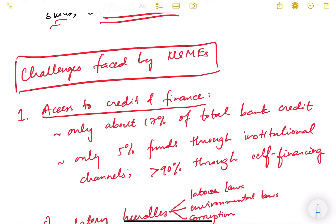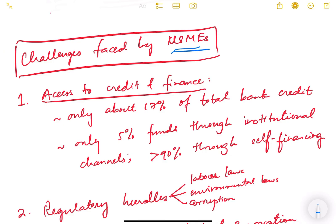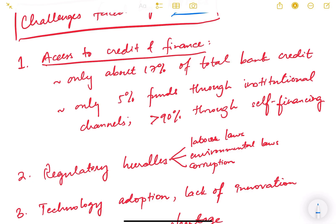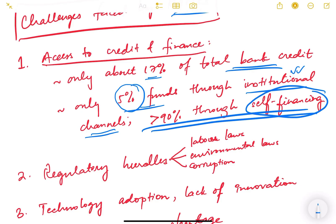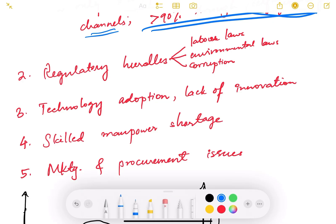Now let us look at the challenges faced by MSMEs. The first major challenge is access to credit and finance. Only about 17 percent of total bank credit goes to MSMEs, and only about 5 percent of funds used by MSMEs come through institutional channels like banks. More than 90 percent is through self-financing, making it very difficult for MSMEs to access capital through money markets or the stock market.